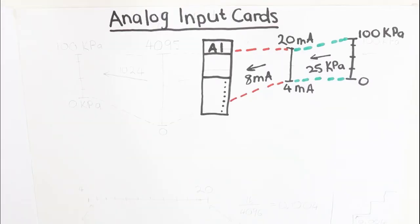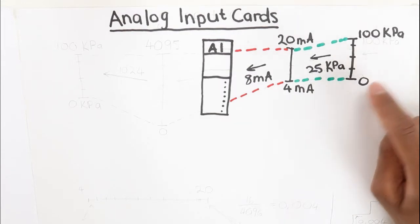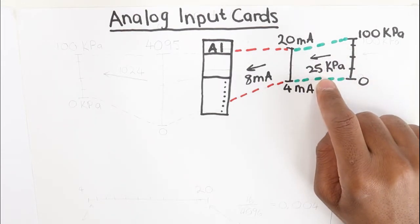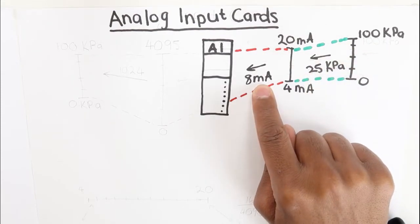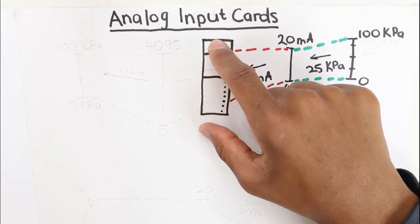Let's use an example. So let's say the pressure in the tank is equal to 25 kPa. So the pressure transmitter will read this and send an 8 milliamp signal to the analog input card.